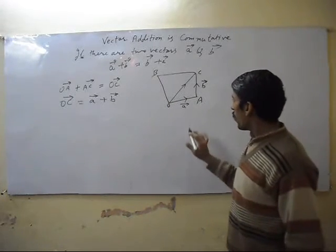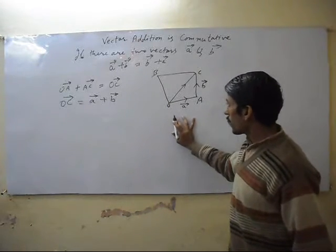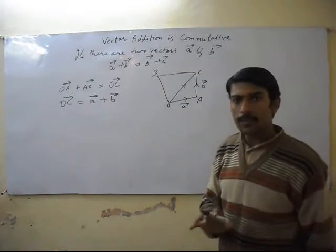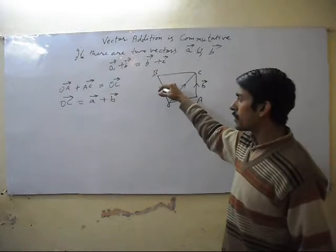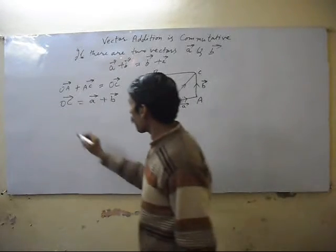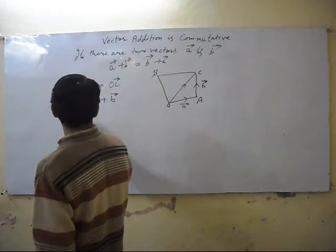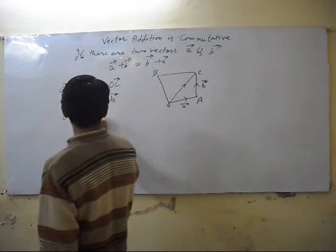Now we are seeing that OA vector is equal to BC. OA vector equals BC.